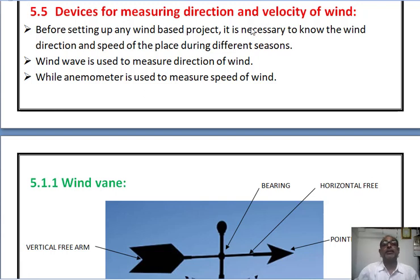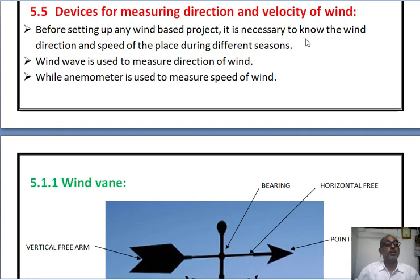Devices for measuring direction and velocity of the wind. Before installing or setting up any project related to wind, it is necessary to know the wind direction and the speed of winds at that particular place throughout the different seasons. Wind vane is used to measure the direction of wind, while the anemometer is used to measure the velocity or the speed of the wind.